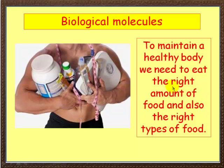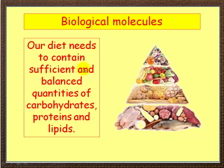In order to maintain a healthy body we need to eat the right amount of food and also the right types of food. Now our diet — and here we're not talking about just a weight loss diet; you can have weight gain diets, weight maintenance diets, or a weight loss diet. But whatever the diet is, it needs to contain sufficient and balanced quantities of carbohydrates, proteins and lipids. Let's look now at each of these types in turn.